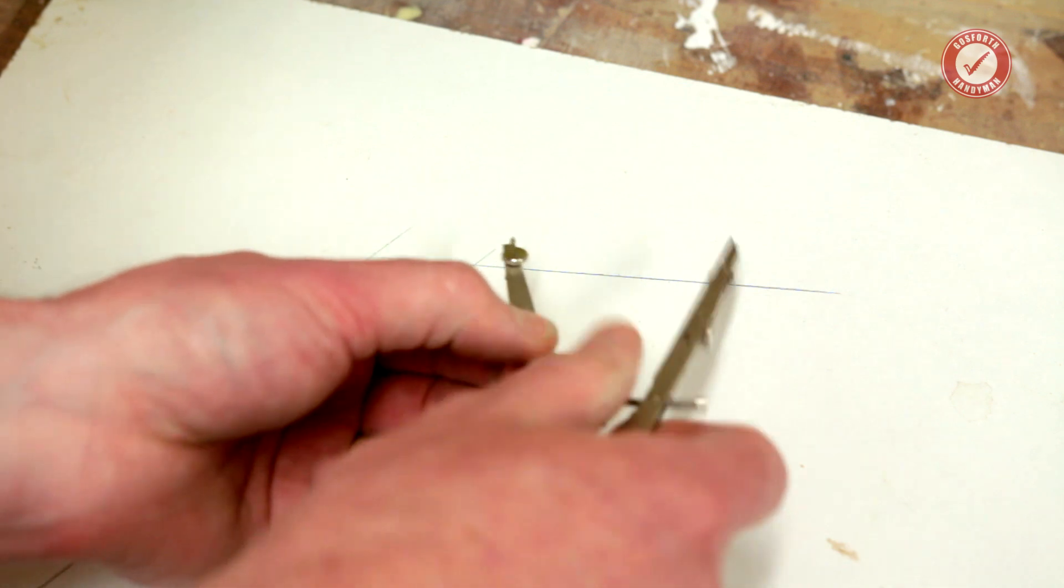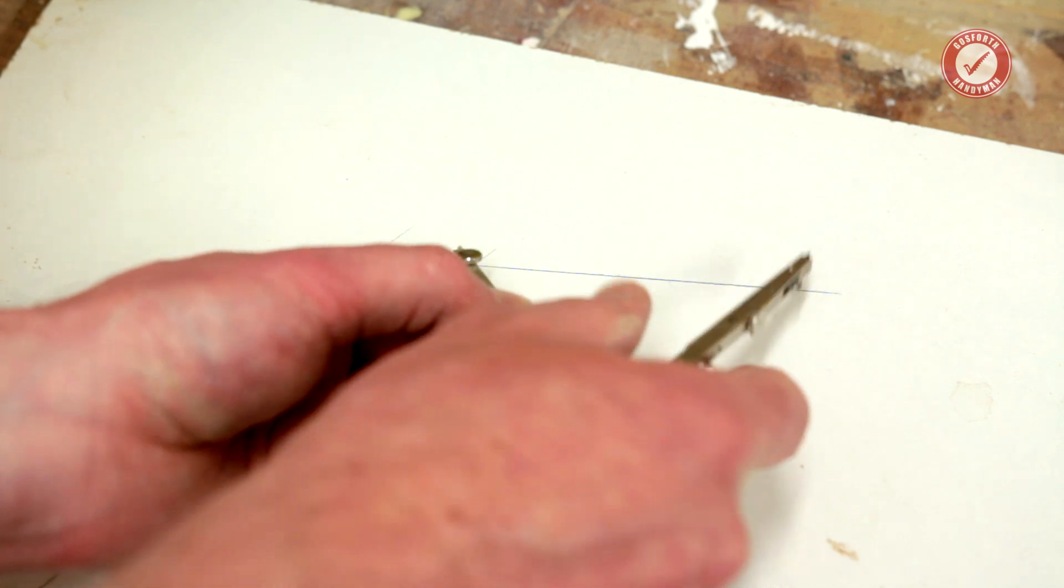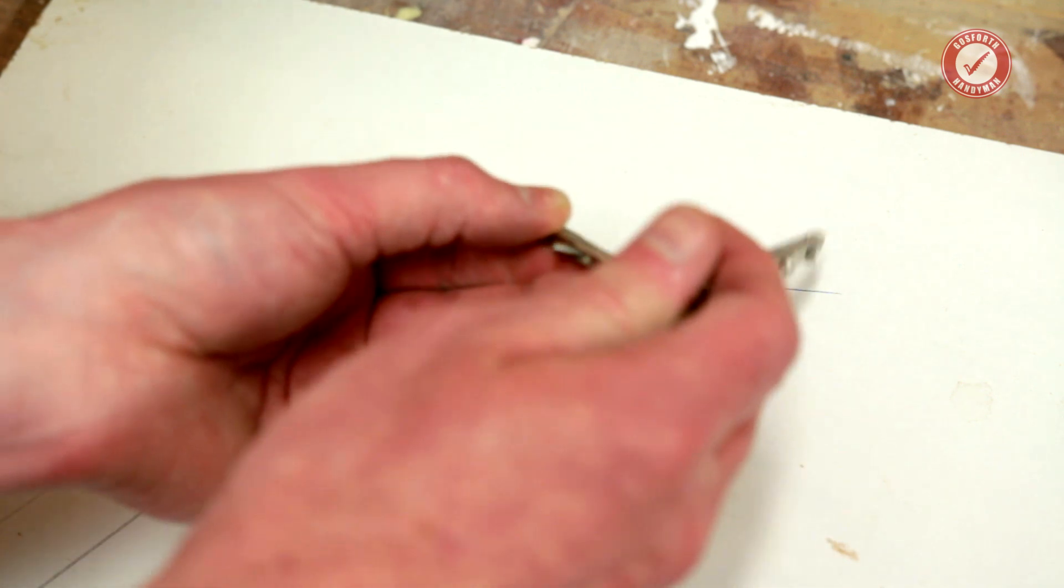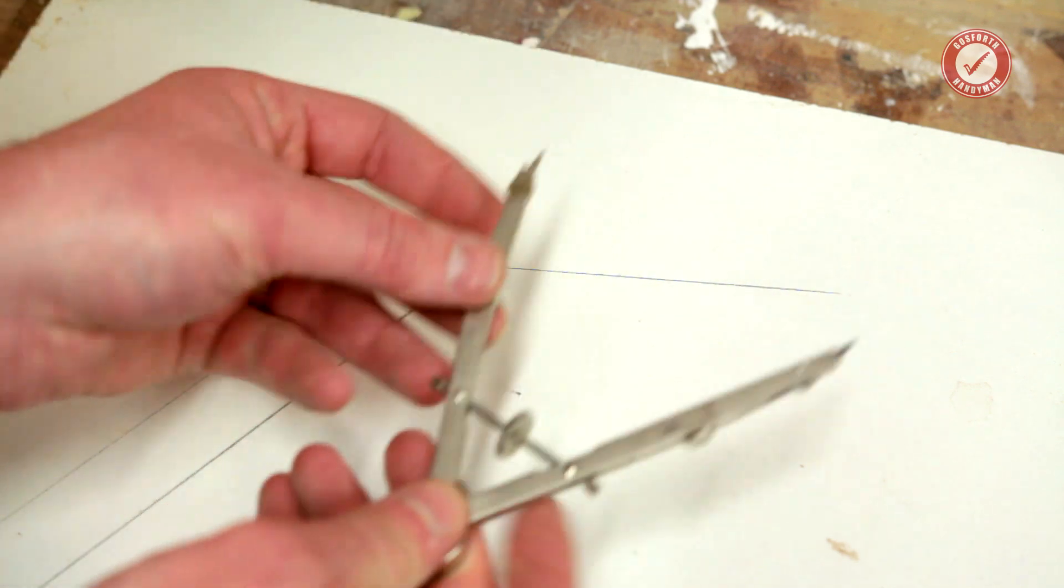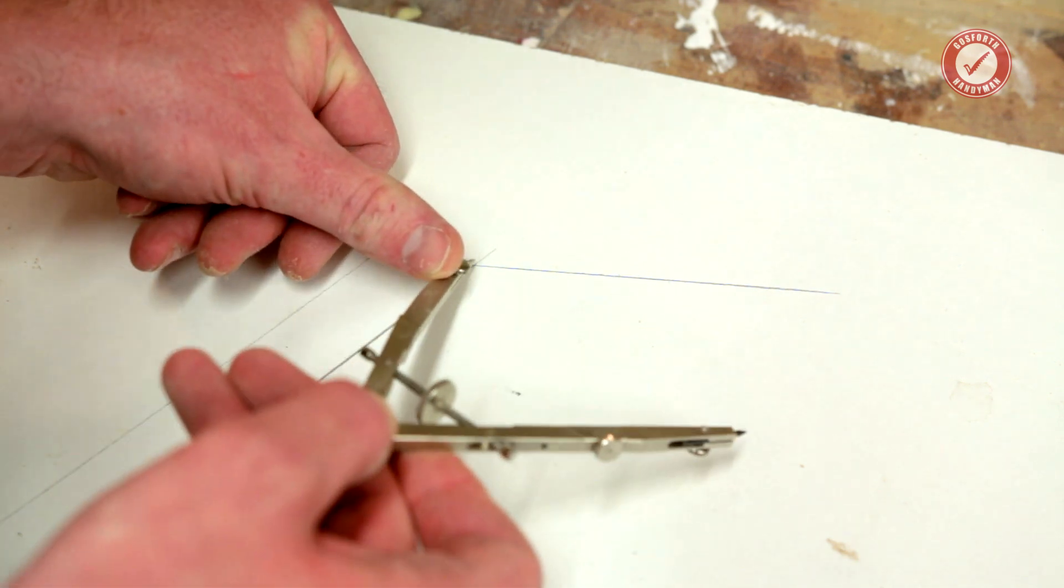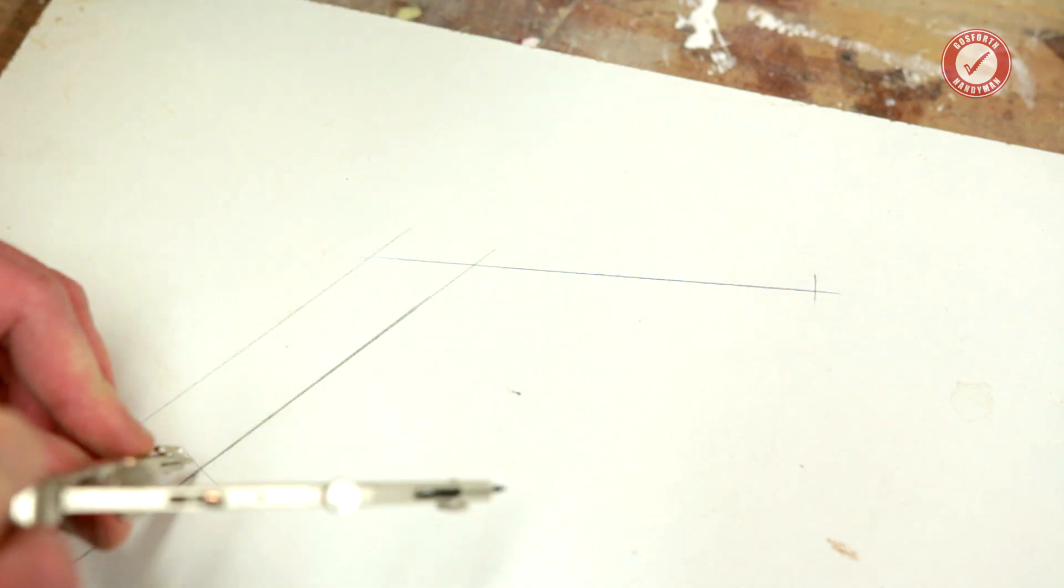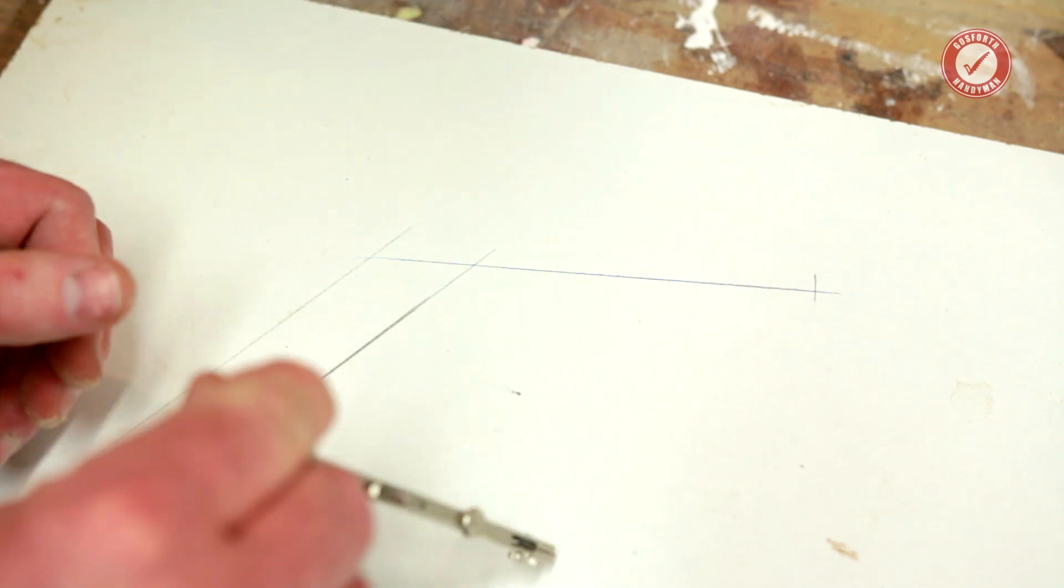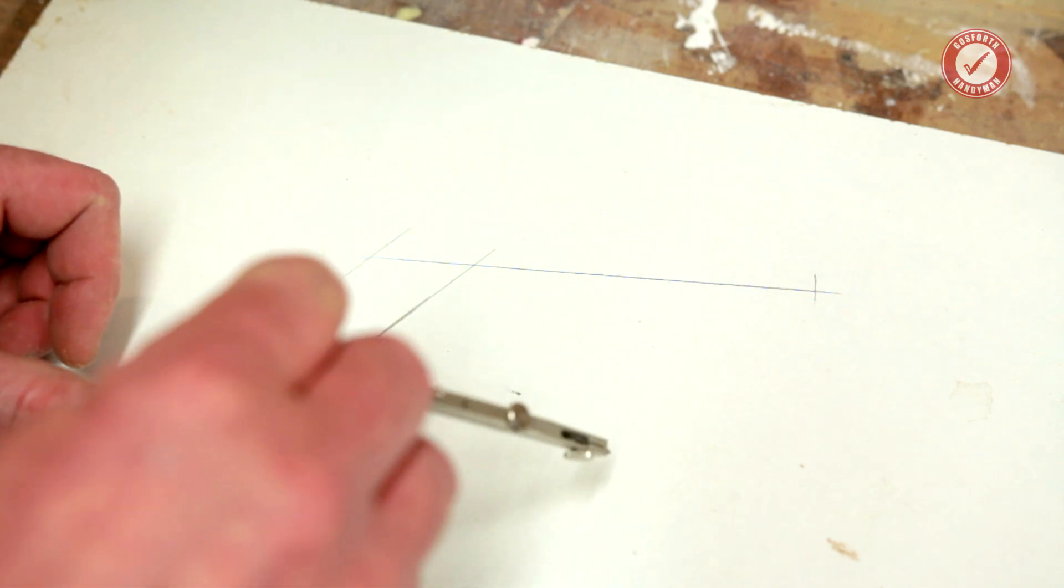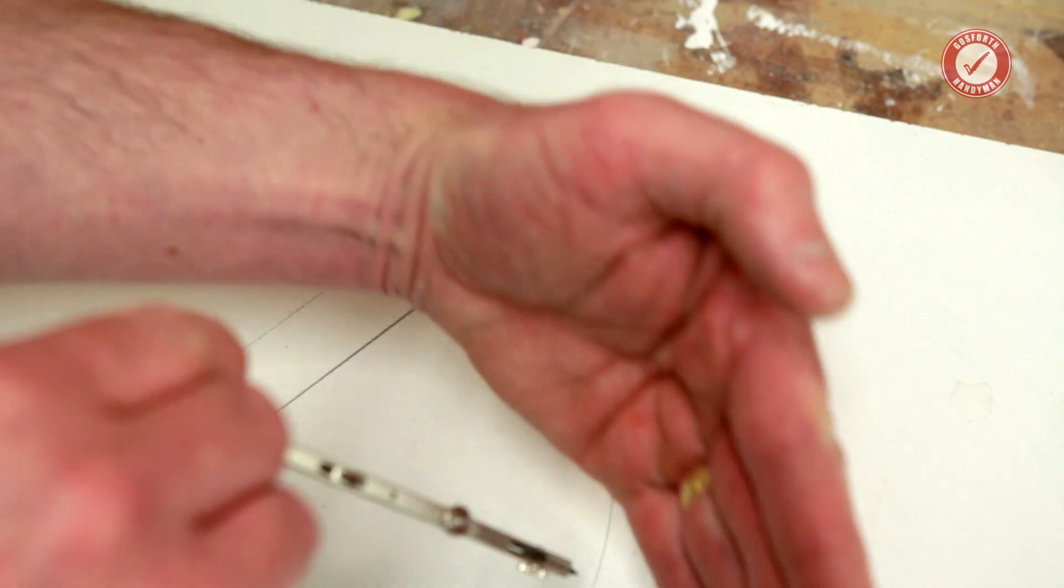All we're going to do is get a pair of compasses. I'm going to make this fairly wide—it doesn't really matter what width you make it, but the wider you can get it, the more accurate it'll be. I'm going to put the tip of the compass on this intersection exactly, and then we're going to do a little mark there and a little mark there. That's about as big as I can get these.